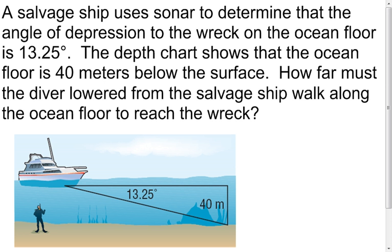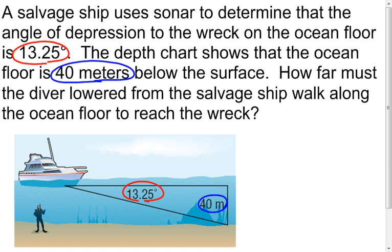My first problem: a salvage ship is using sonar to determine that the angle of depression to the wreck on the ocean floor is 13.25 degrees. The depth chart shows that the ocean floor is 40 meters below the surface. What it wants to know is how far must the diver, lowered from the salvage ship, walk along the ocean floor to reach the wreck. The diver swims to a point directly above the wreck and then falls down — either way, we're going to find that length.